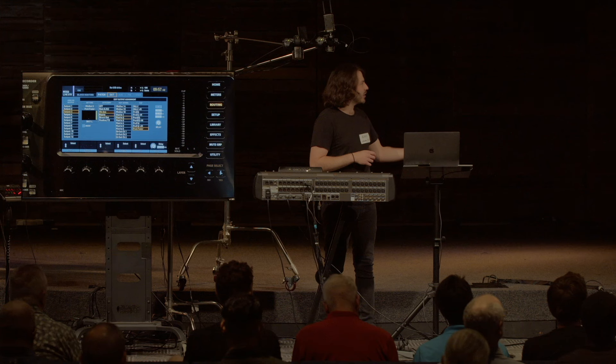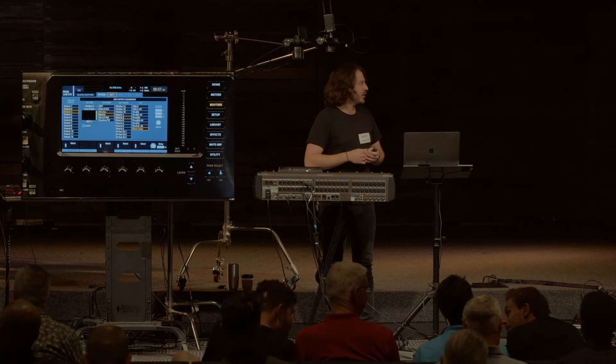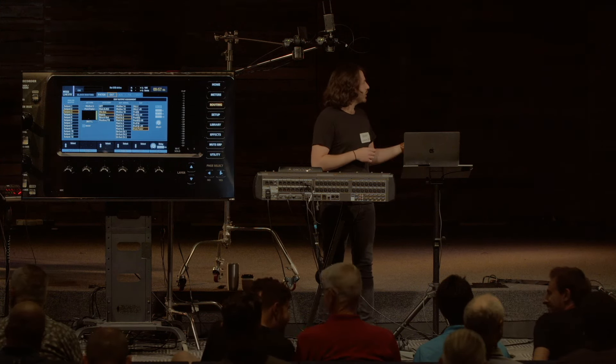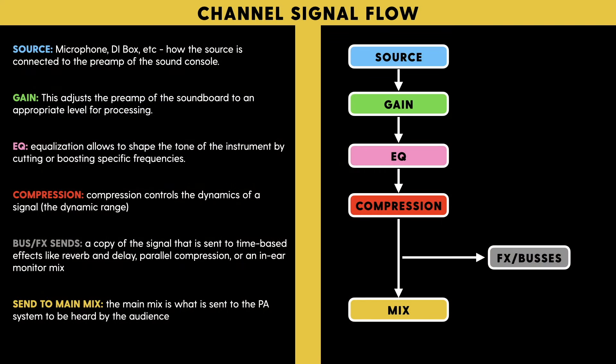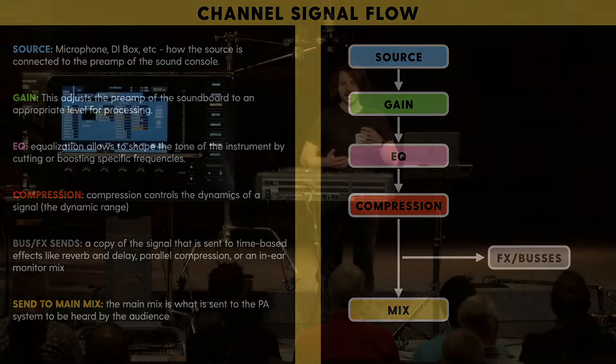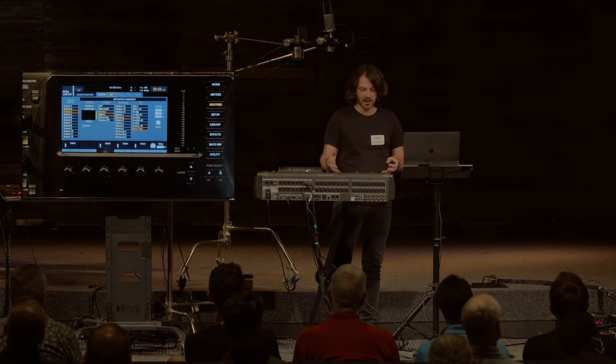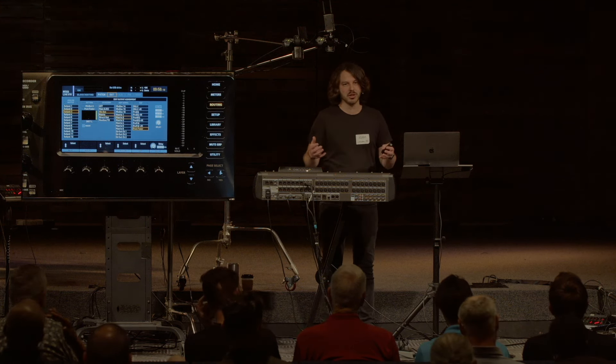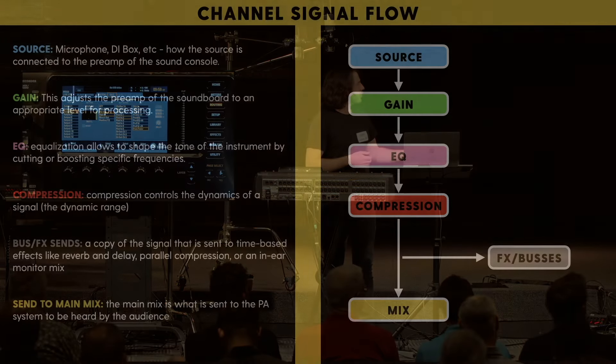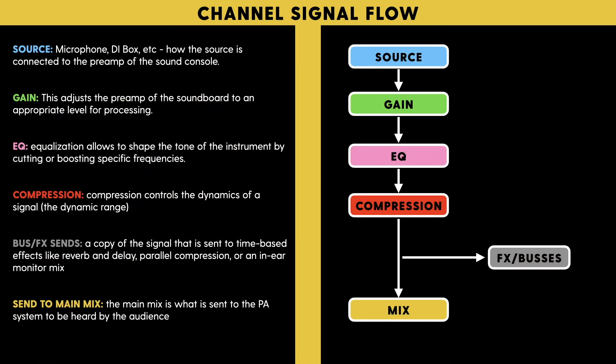As you can see in the diagram, source goes into the gain, and gain affects EQ, gain affects compression, gain affects your mix and your effects buses. Compression is next — that is controlling the dynamics of the signal. A lot of times you'll have a vocalist or an instrument where they're playing quieter and then louder, and that's not exactly what we're trying to achieve. Compression allows us to have a shorter dynamic range as we're mixing.